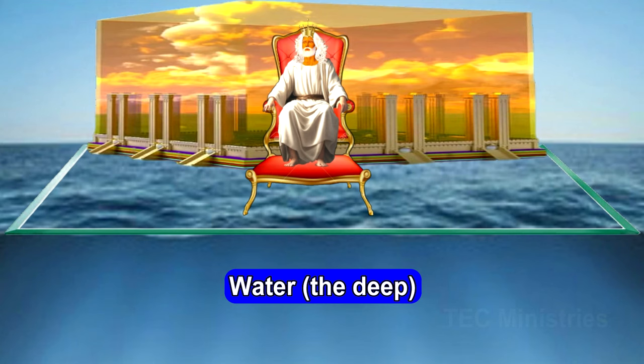The throne, or the kingdom of heaven, the government of God itself, was created first, as a habitation for the Father and the Son, with his holy angels to operate in the spiritual realm. Then He created the earth, his footstool, against or touching his spiritual kingdom, to be for physical things — to live, move, and have their being.